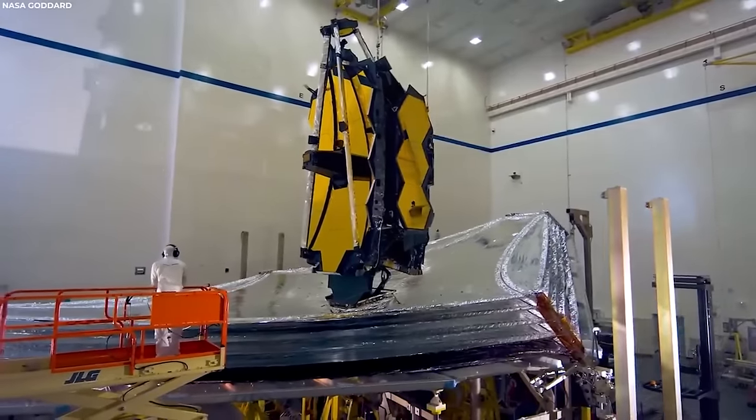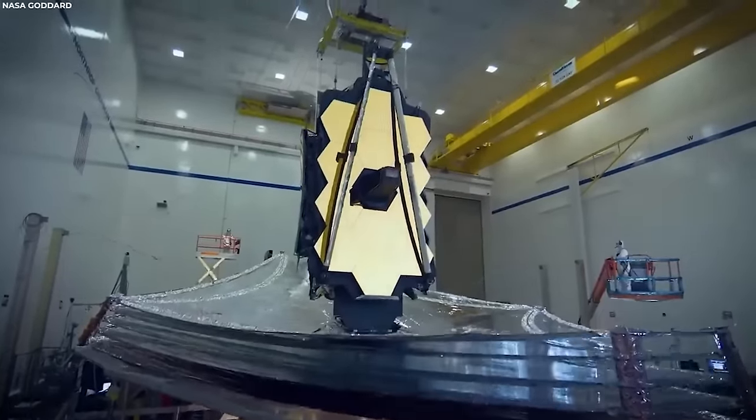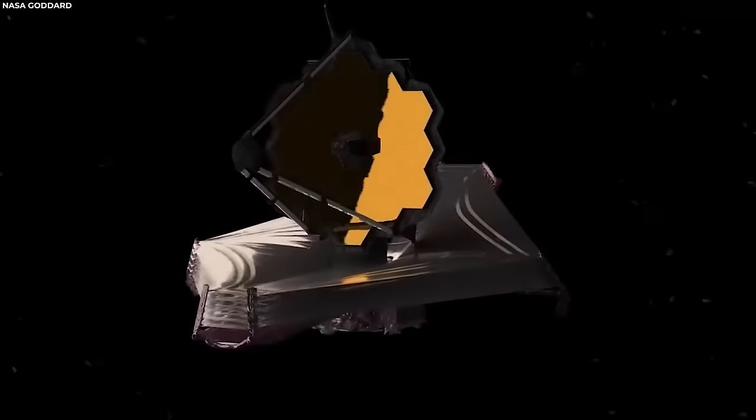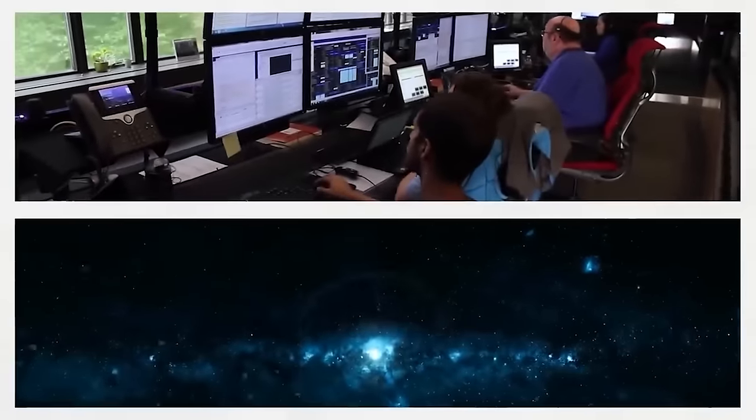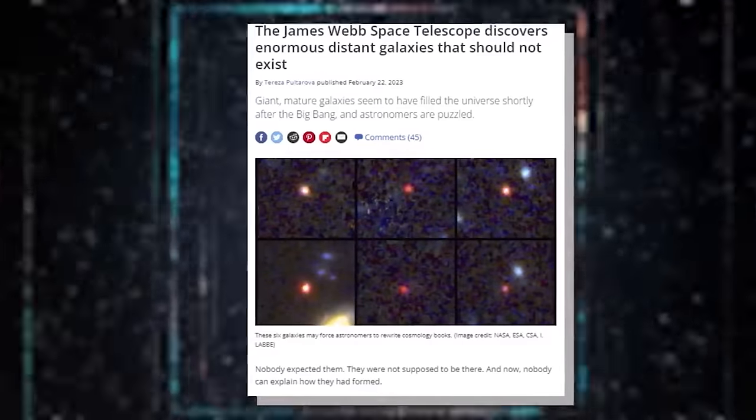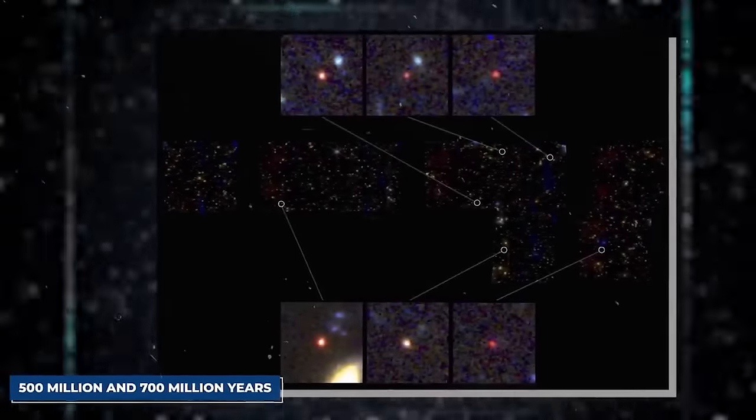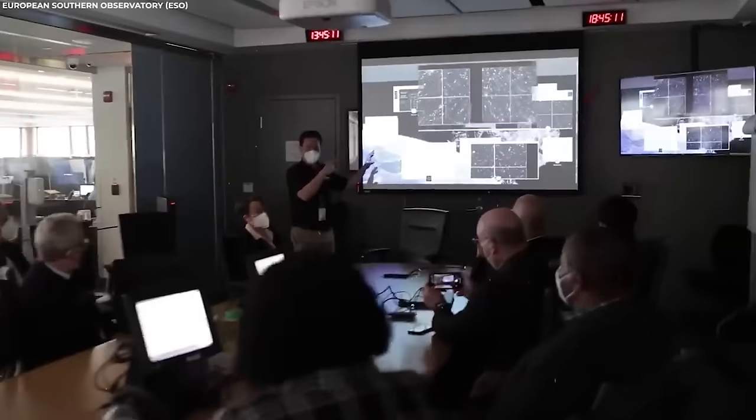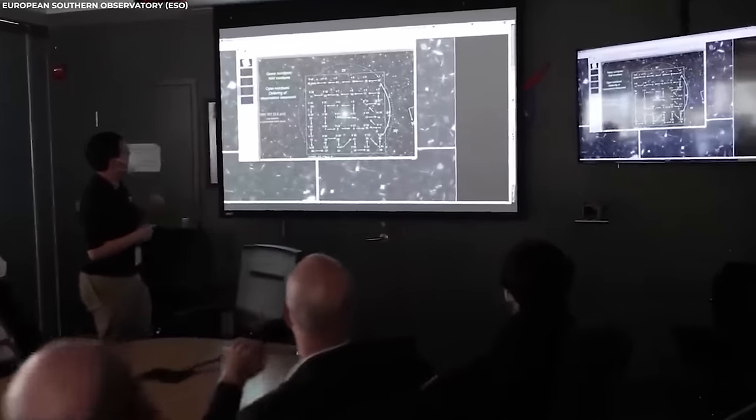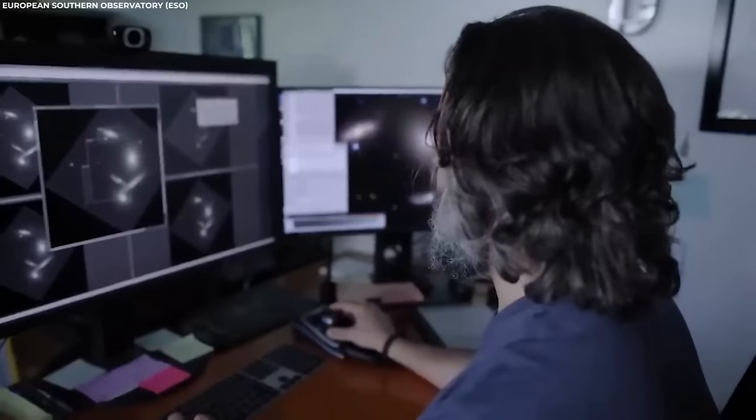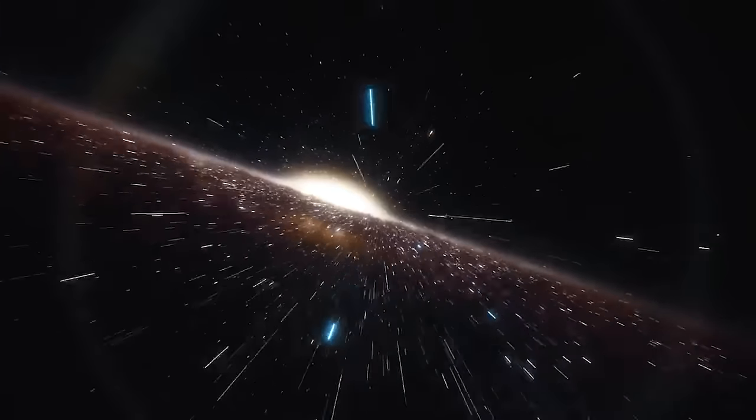This incredible telescope allows us to look far back in time and discover unexpected objects from the early days of the cosmos. The JWST, with its advanced capabilities, has enabled astronomers to peer back into the early days of the universe. And guess what? They've stumbled upon something unexpected. In a recent study published in the journal Nature, the JWST discovered six massive galaxies that existed between 500 million and 700 million years after the Big Bang. Researchers were only expecting to find small newly formed galaxies, but the JWST caught them by surprise.